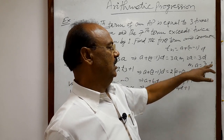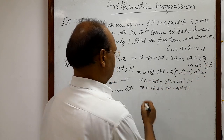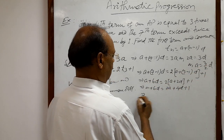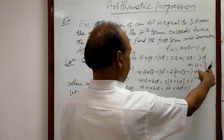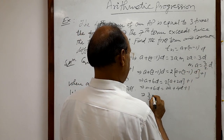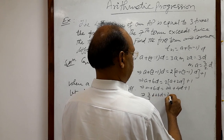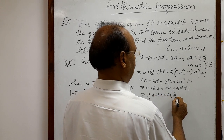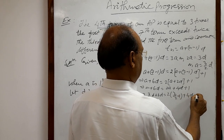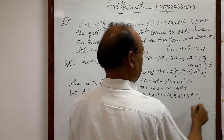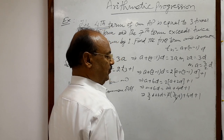Now let us put the value a = 3d/2 into the equation a + 6d = 2a + 4d + 1. Substituting, we get (3/2)d + 6d = 2·(3/2)d + 4d + 1. The 2 will cancel out on the right side.